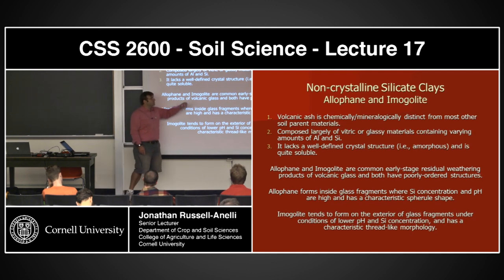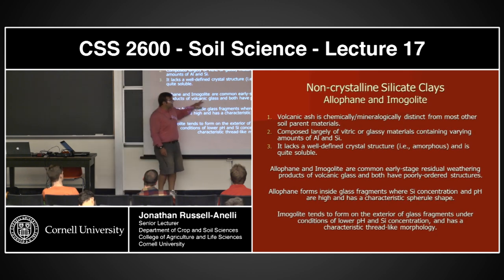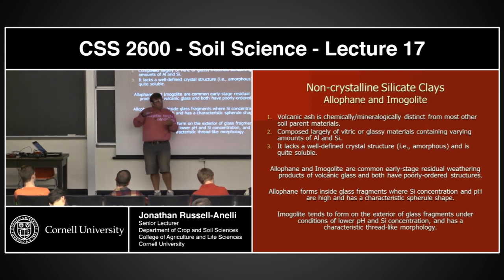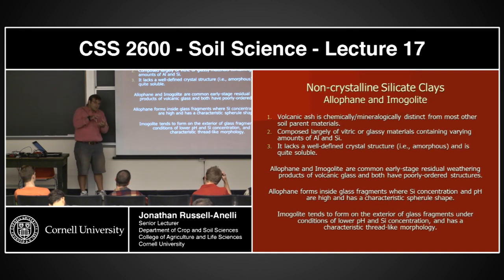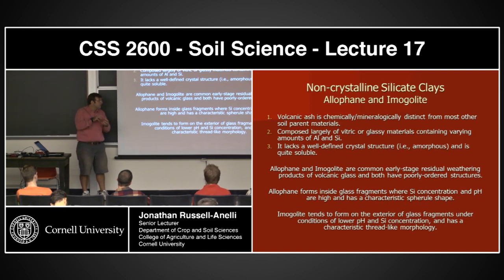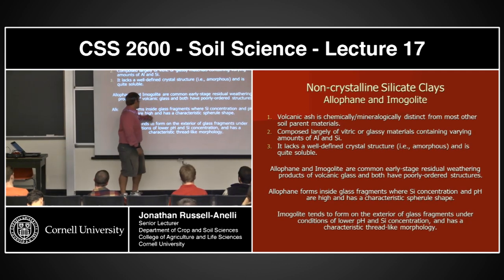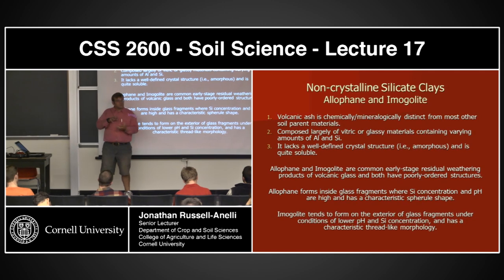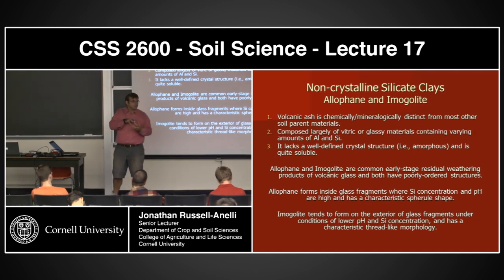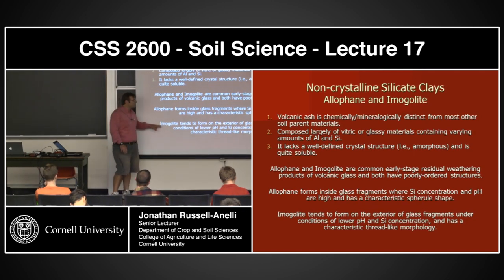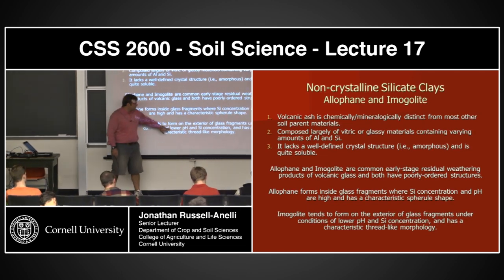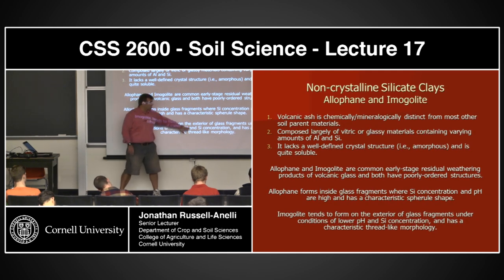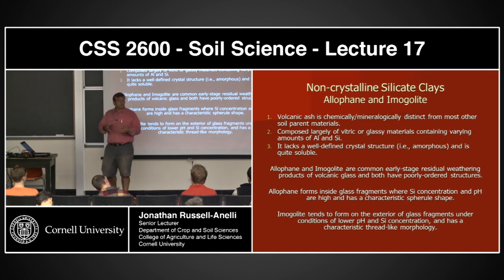The parent material is basically the same, but the nature of it is different. It's composed largely of vitric or glassy materials containing various amounts of aluminum and silica, and it lacks the well-defined crystals from slower-cooled environments. Allophanes and imogolites are the common early-stage residual weathering products. Allophanes form inside the glass fragments where silicon concentrations and pH are fairly high, and they have a characteristically spheroidal shape.